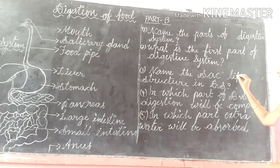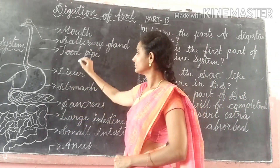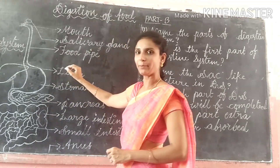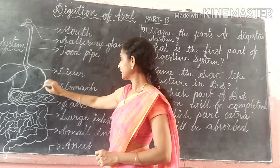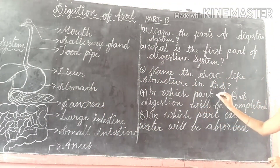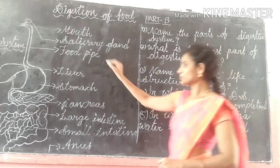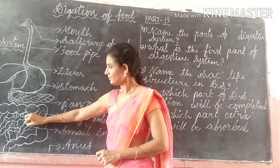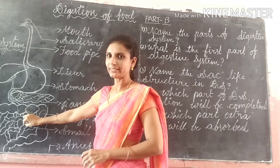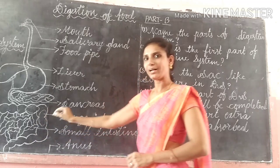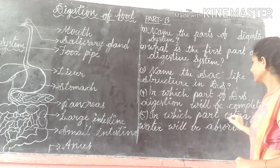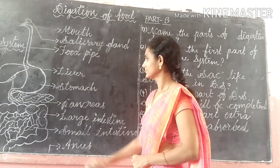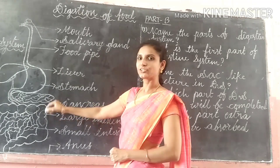Next question: name the sac-like structure in the digestive system. A sac is a bag-like structure — that is the stomach, which is the muscular bag. Next question: in which part of the digestive system is digestion completed? Digestion is completed in the small intestine, and nutrients are absorbed by the blood and taken to all cells of the body. Finally, in which part is extra water absorbed? In the large intestine, extra water is absorbed.